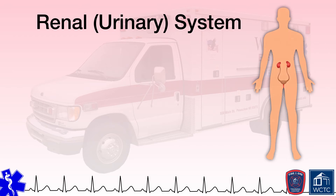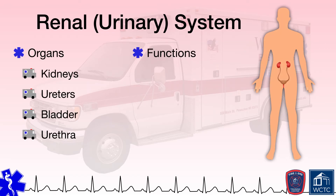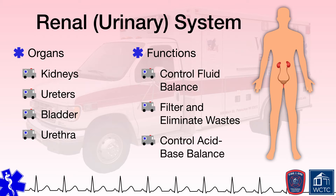The organs of the renal or urinary system include the kidneys, ureters, bladder, and urethra. These organs function together to control the body's fluid balance, filter and eliminate wastes, and control the acid-base balance within the body. The kidneys also produce hormones that perform many functions in the body, one of which is regulating blood pressure, and they can also produce glucose if necessary given a period of going without food.